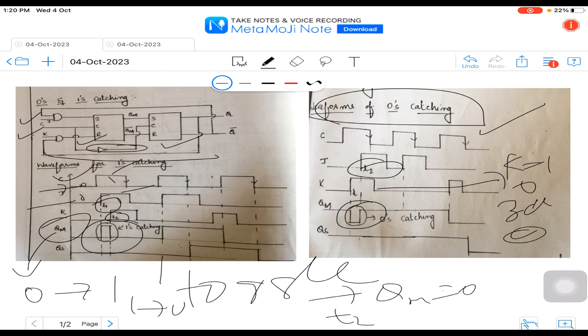And becomes 0. But what happens in this case is this 0 which is generally not taken up by the slave and this is lost in this case. So this is called 0s catching. This is the whole concept of 0s and 1s catching. Thank you.